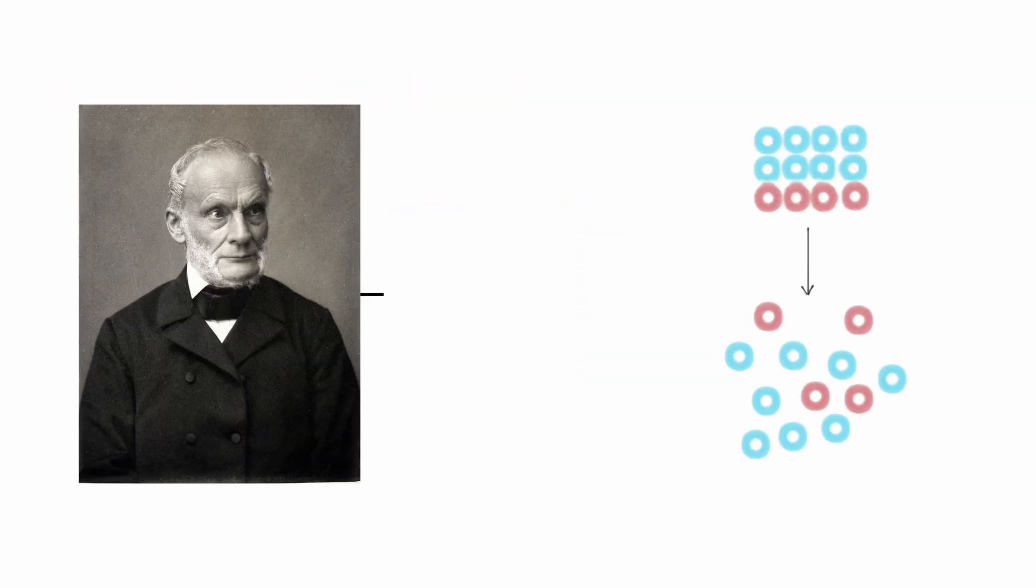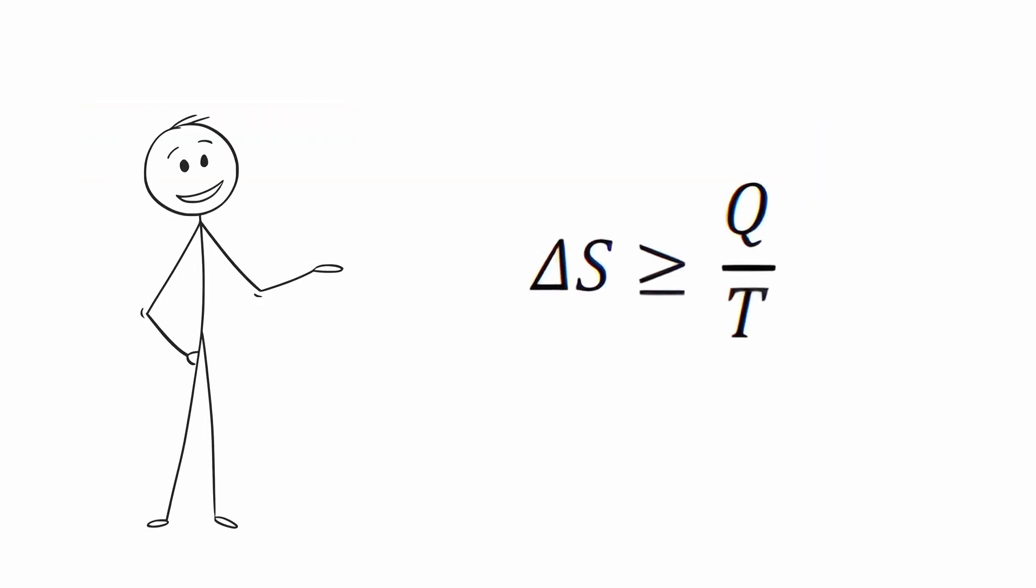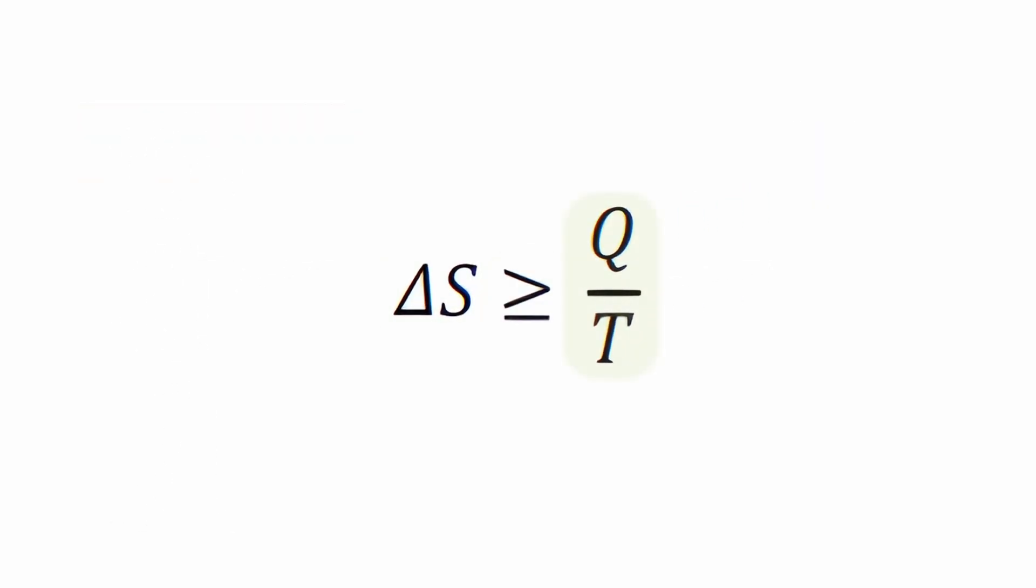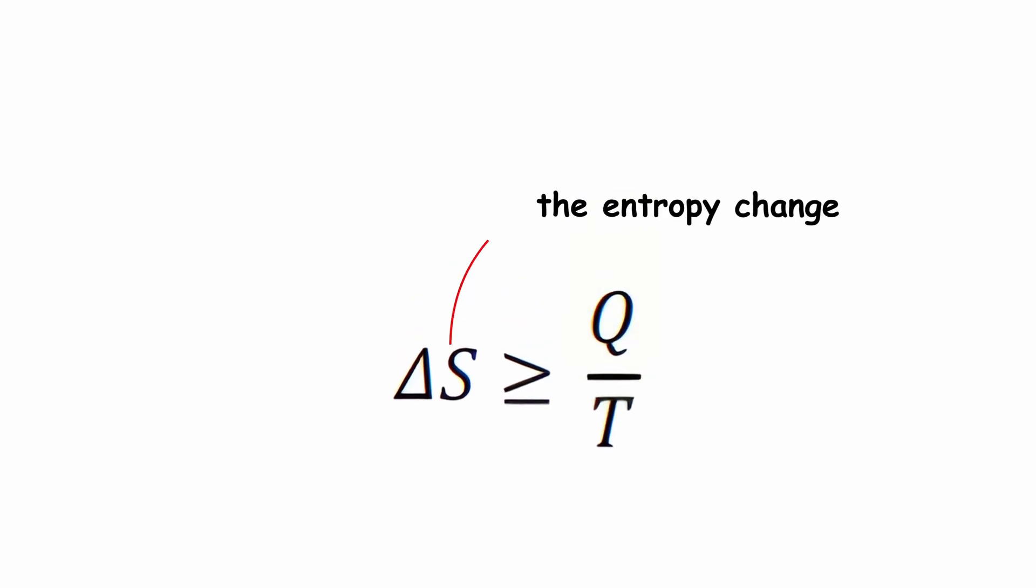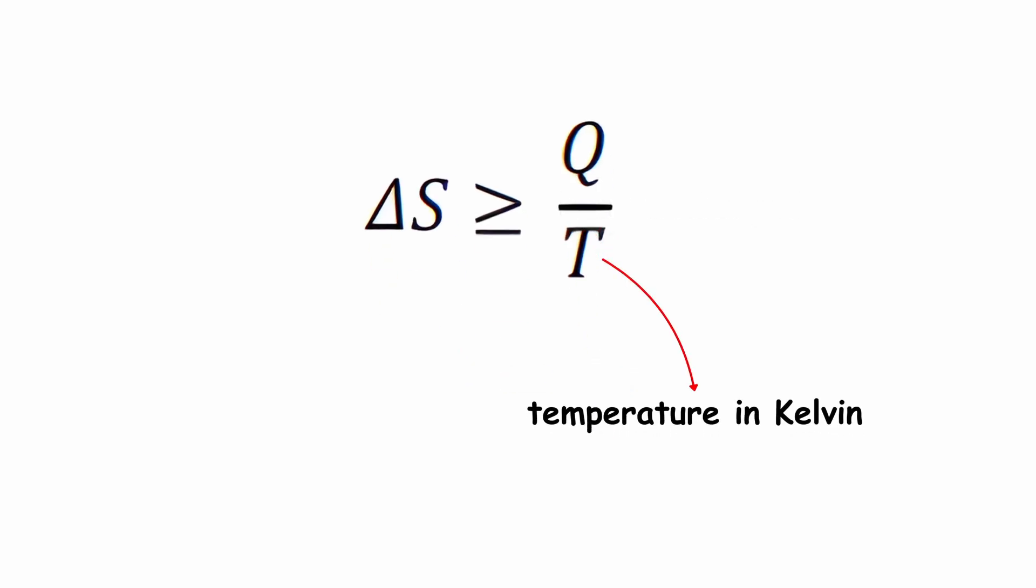In 1865, Clausius first coined the concept of entropy, introducing the equation delta s is greater than or equal to q over t. Where delta s represents the entropy change, delta q is the heat exchanged, and t is the temperature in Kelvin.